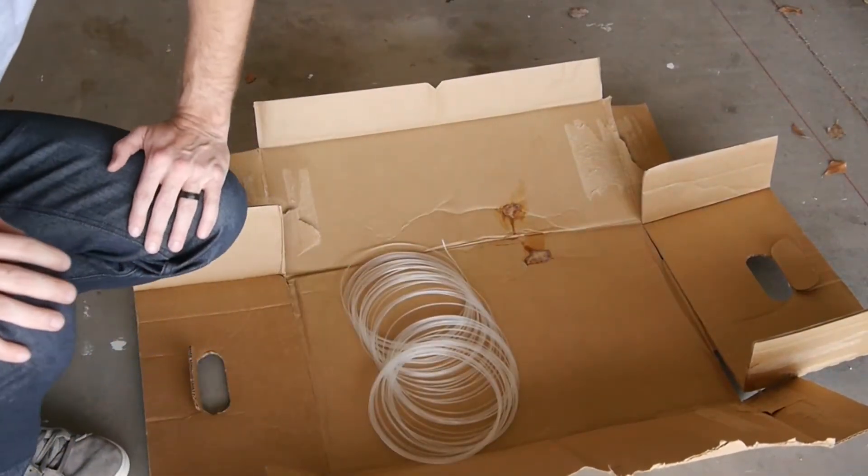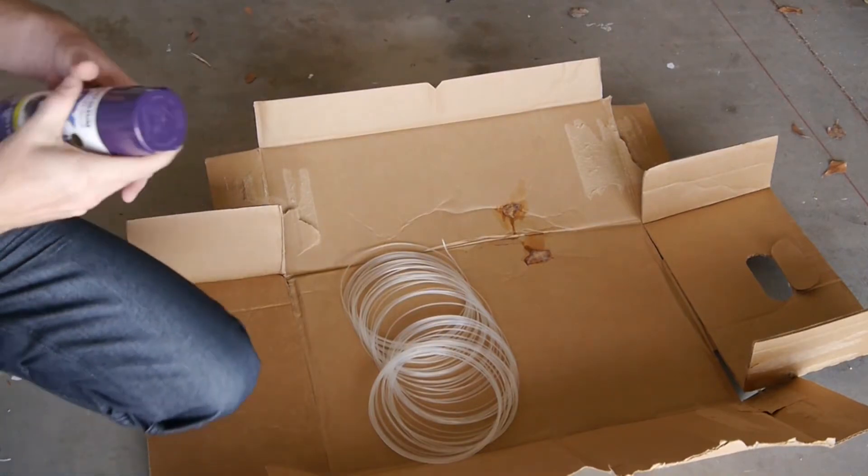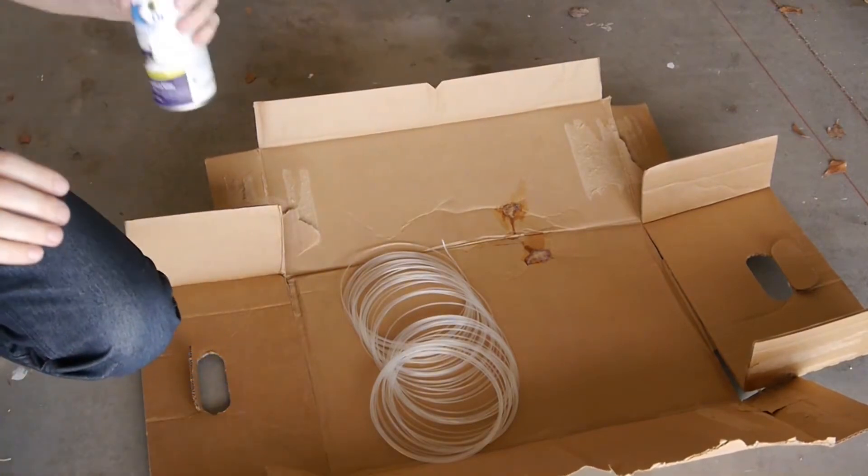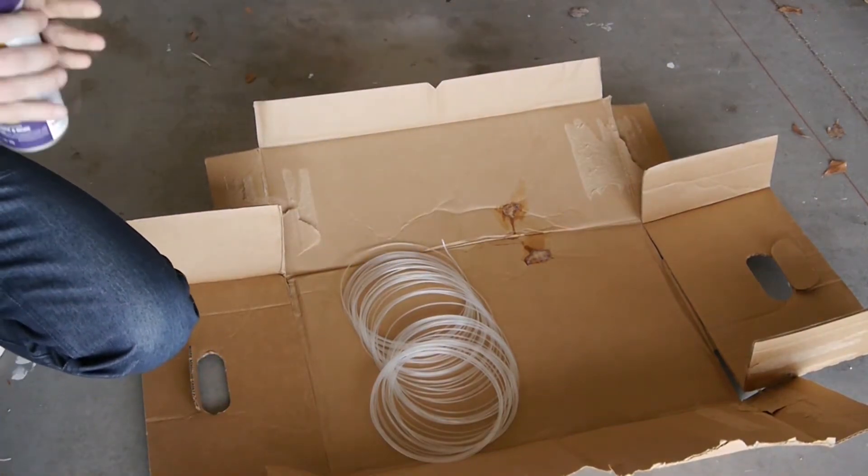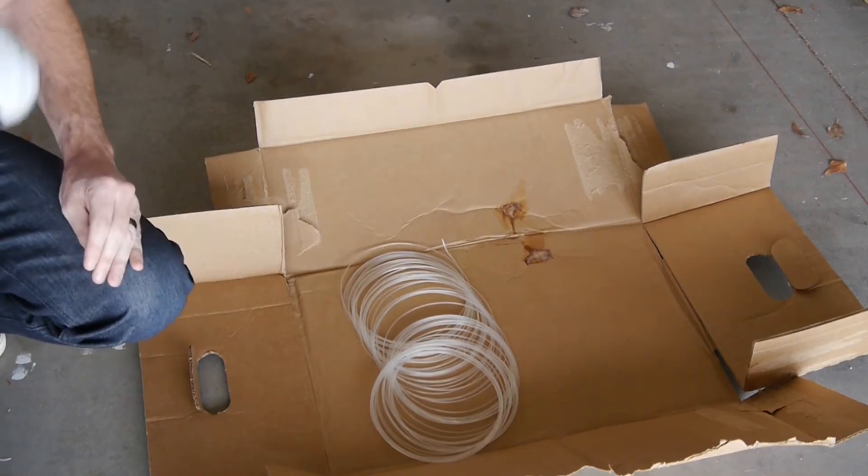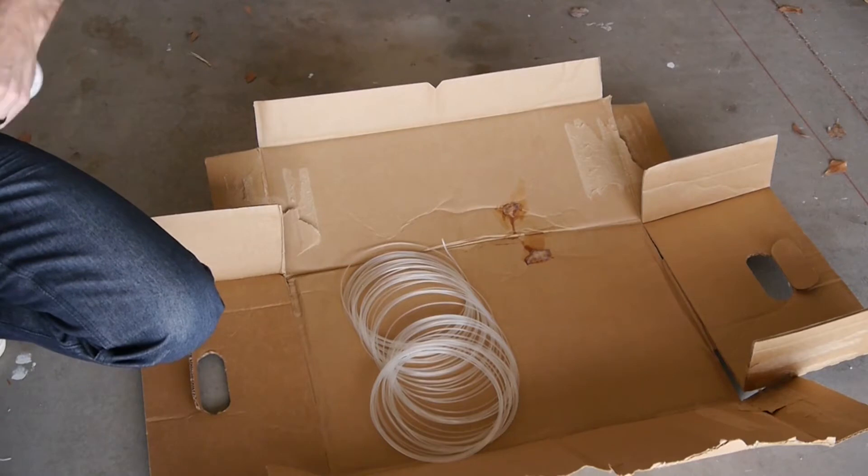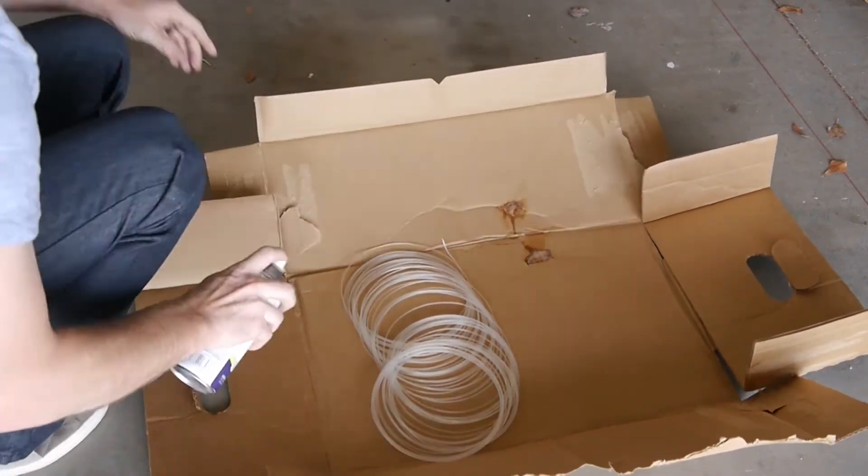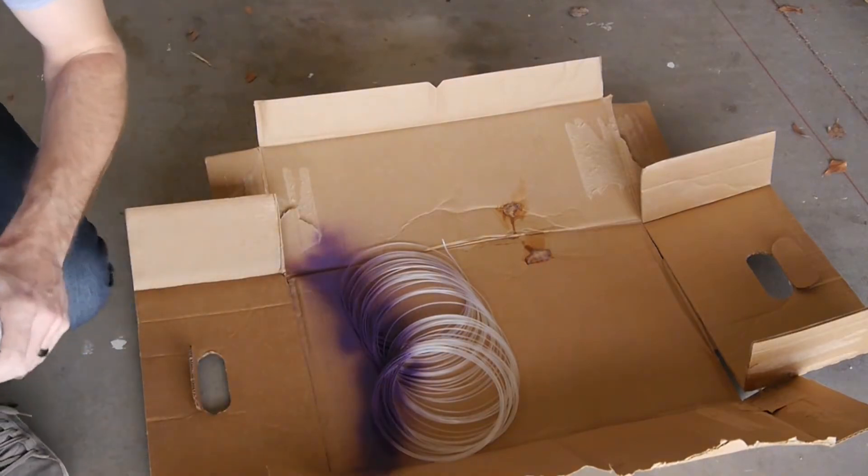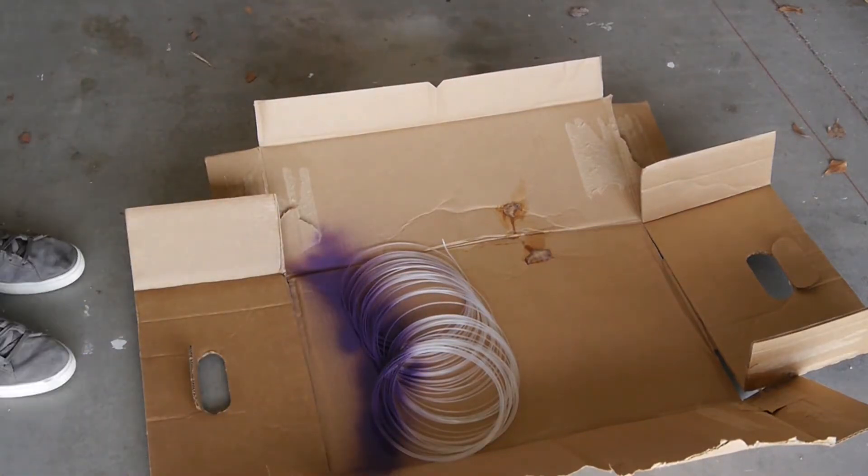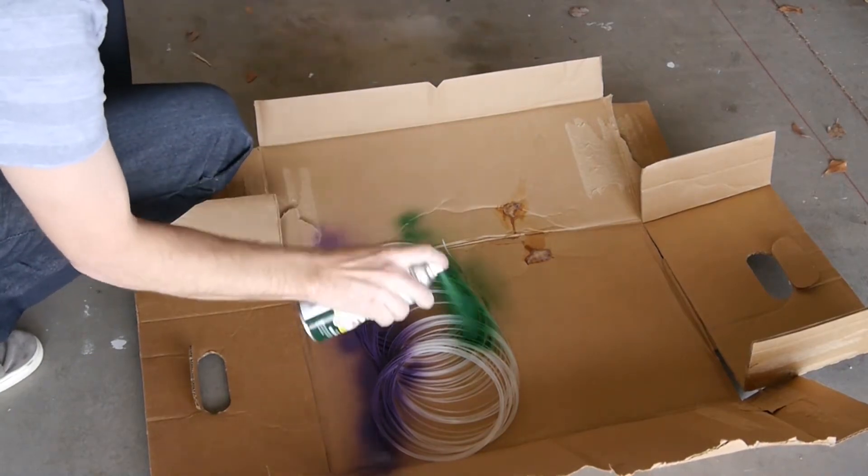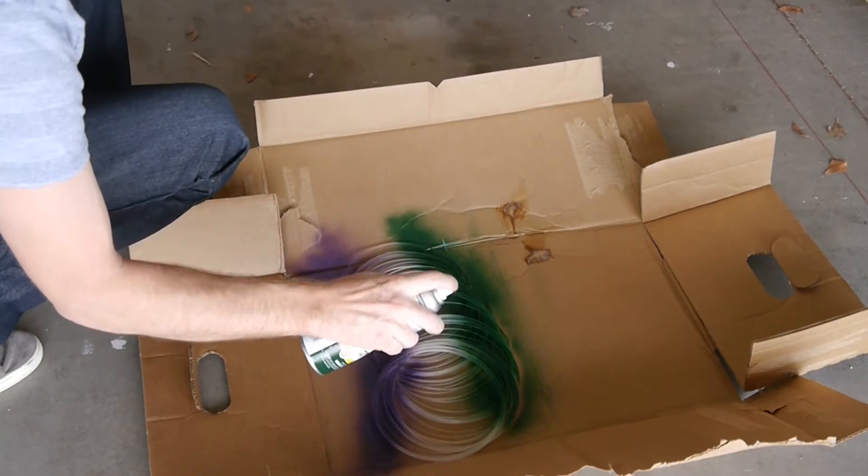Filament. Spray paint. Start with some purple. Shake it up real good. All right, there's some purple. I got some green. All right. I got some yellow here.